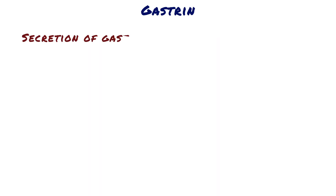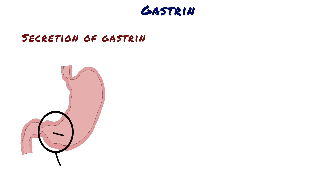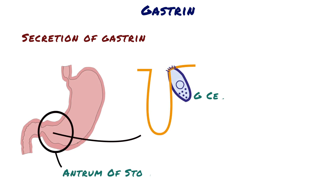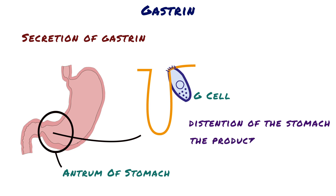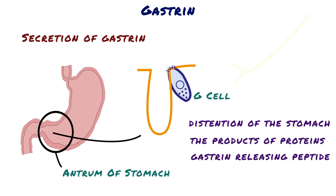Gastrin is secreted by the G-cells of the antrum of the stomach in response to stimuli associated with ingestion of a meal, such as distension of the stomach, the products of proteins, and gastrin-related peptide, which is released by the nerves of the gastric mucosa during vagal stimulation.